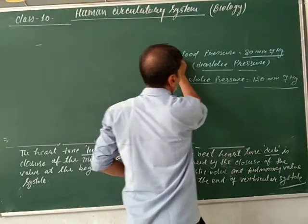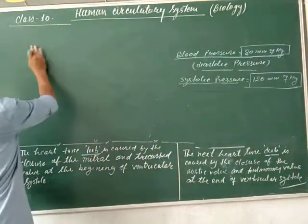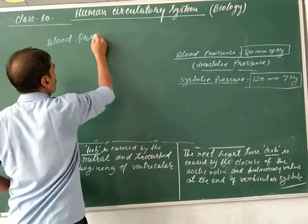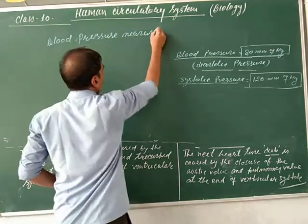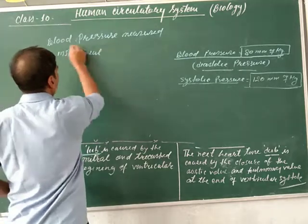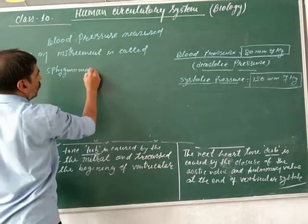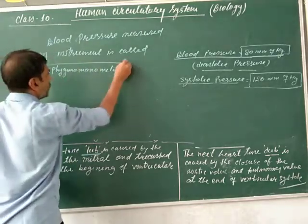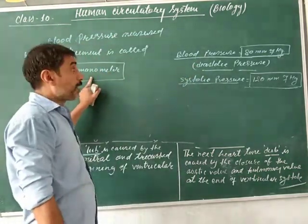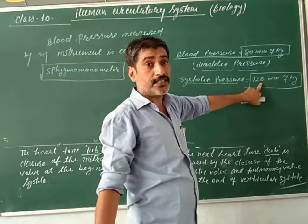Blood pressure is the minimum and maximum pressure in the heart. Blood pressure is measured by an instrument called a sphygmomanometer. If the systolic pressure is greater than 140 millimetres of mercury, then we can say that is hypertension or high blood pressure.